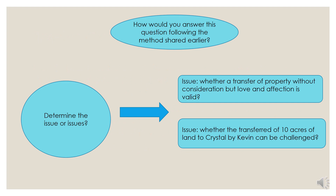From the fact, you know that a father transferred his land to a daughter for love and affection, and the daughter did not pay anything. So the issue here is the consideration — the consideration of the transaction. The son is not happy with that and wants to challenge it. From the fact, how do you determine and identify the issue? How would you answer this question following the method shared earlier?